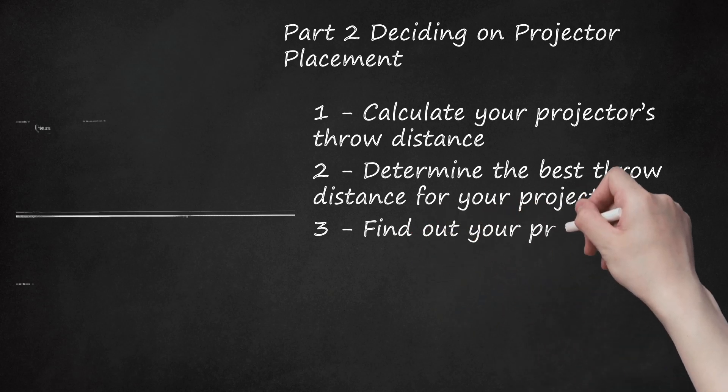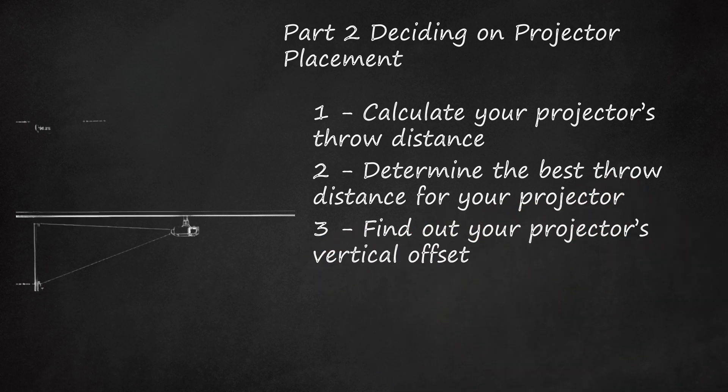3. Find out your projector's vertical offset. The vertical offset of your projector is how high or low it needs to be in order for the image to project at the proper screen height. It should appear as a percentage in your projector's manual. A positive offset (+96.3%) means the image will project higher than the lens, whereas a negative offset (-96.3%) means it will project lower. As projectors are mounted upside down, positive is the more important offset to pay attention to.